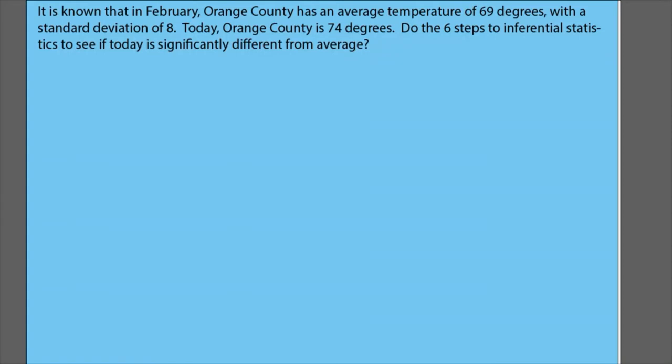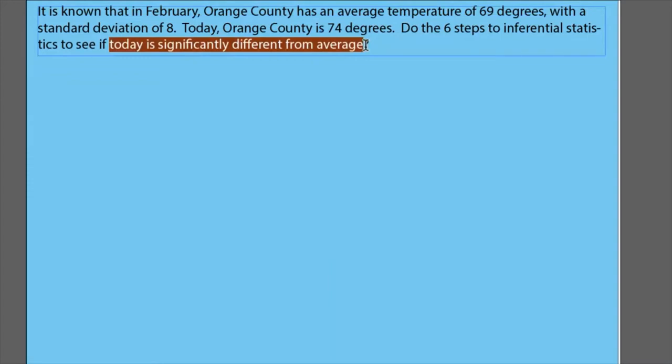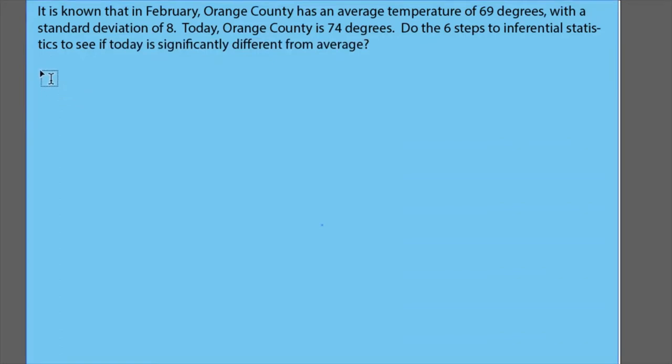Let me show you a trick for getting your research question right. First I'll read this prompt. It says it is known that in February Orange County has an average temperature of 69 degrees with a standard deviation of 8. Today Orange County is 74 degrees. Do the six steps to inferential statistics to see if today is significantly different from average. What I'm going to do is copy where it says 'do the six steps to inferential statistics to see if' and I'm going to copy 'today is significantly different from average' because that's really the research question I'm going for.